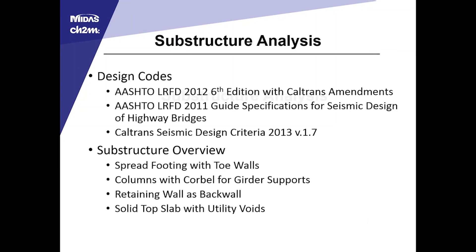Moving into the substructure analysis, the design code was AASHTO 2012. I also used the AASHTO LRFD 2011 guide specification and Caltrans Seismic Design Criteria version 1.7. An overview of the substructure: spread footings with toe walls, columns with corbel for girder supports, retaining wall for the back wall, and a solid top slab with the exception of utility voids.